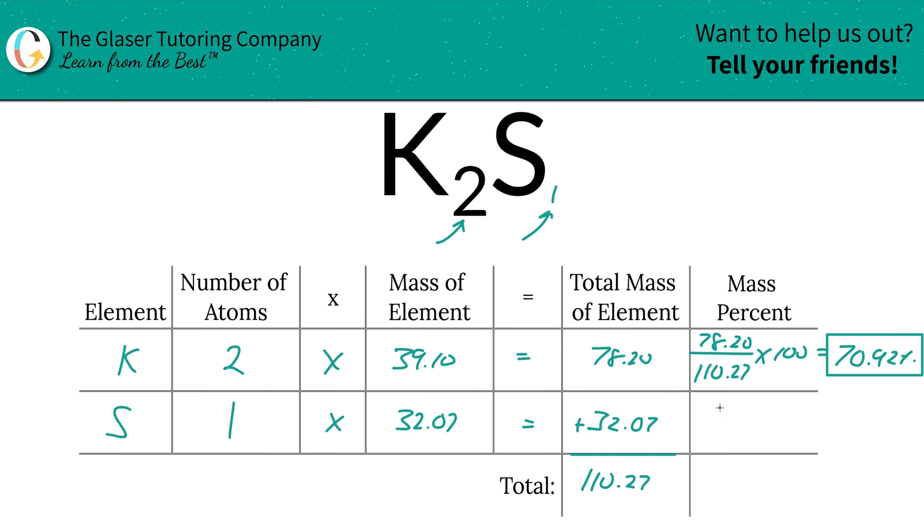Then take the total mass of the element for sulfur here, so 32.07, divided by the total mass—that's why we had to find that first—and then multiply that by 100, and we get a percentage here of roughly 29.08 percent. All right, that's all there is to it, my friend.